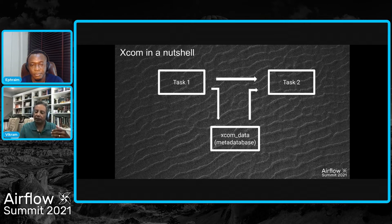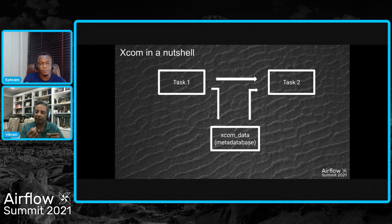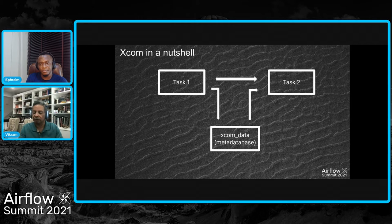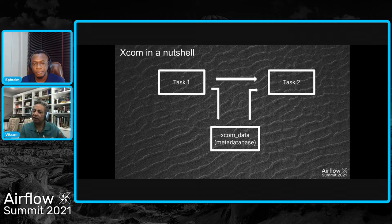When you want to share data using XCOM, before control is transferred at the end of task one toward task two, you can write data using the XCOM mechanism, which is then written to the metadata database for Airflow as the final step before returning control to the Airflow scheduler. This data then gets written, the prior task exits, and the scheduler or executor starts the second task, which reads the data from the preceding task again using the metadata database. That's how XCOM data transfer actually works in a nutshell.